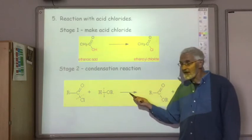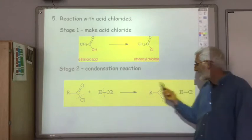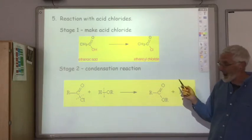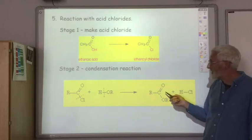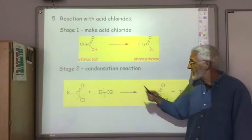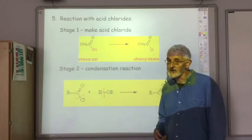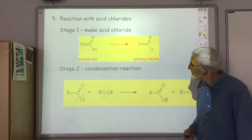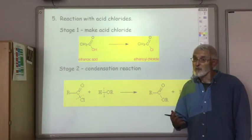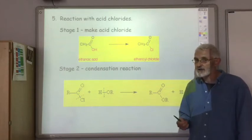But the important thing is it's not an equilibrium reaction. This reaction will go to completion. So you'll get far higher yield of ester by reacting the alcohol with an acid chloride than you will by reacting the alcohol with the carboxylic acid, even with the use of concentrated sulfuric acid. Okay, so there are the five reactions of alcohols you should know. Most of them are already known to you, but a couple of extra ones in there as well.